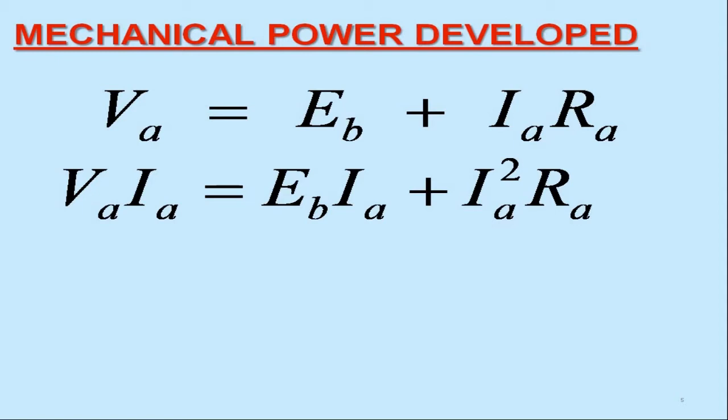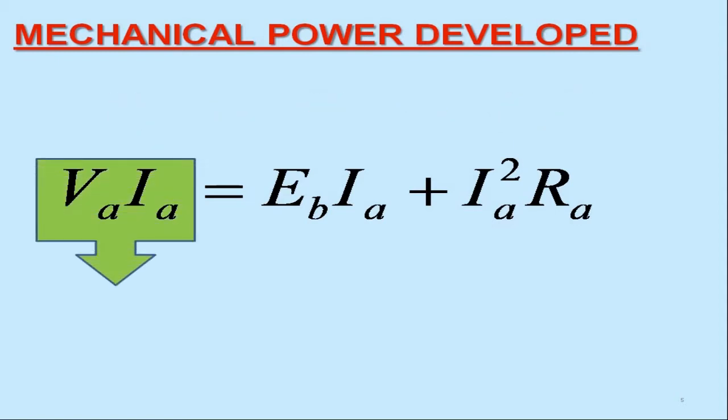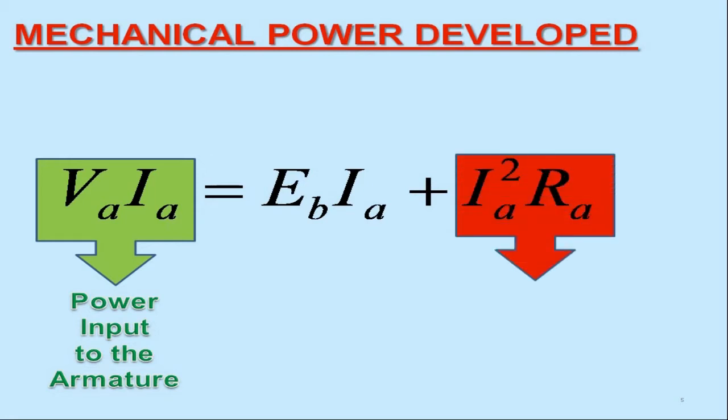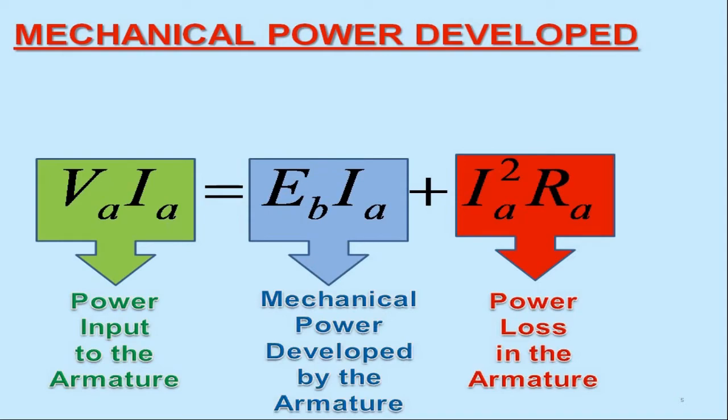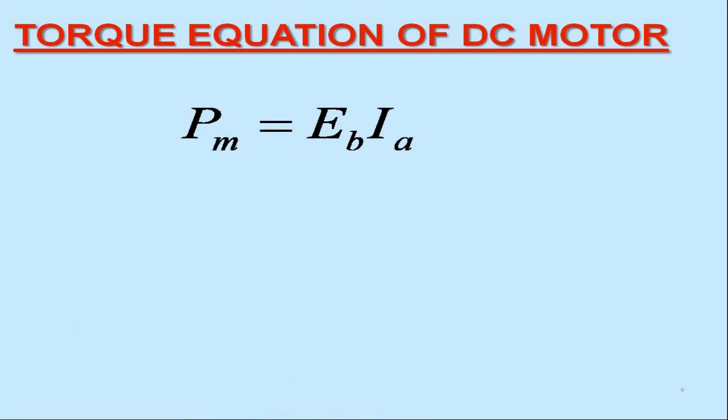It is interesting to see that the first term in this equation is nothing but the power input to the armature of the DC motor, while the third term represents the power loss in the armature. Therefore, the second term must be the mechanical power developed by the armature. We may express the mechanical power developed, PM, as Eb times Ia.